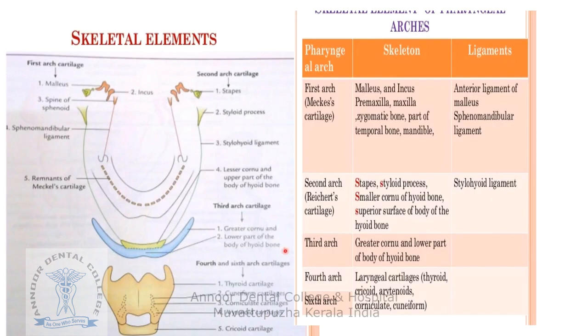The third arch contains the greater cornu and the lower part of the body of the hyoid bone.